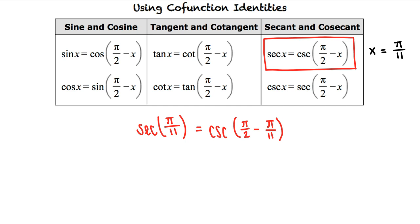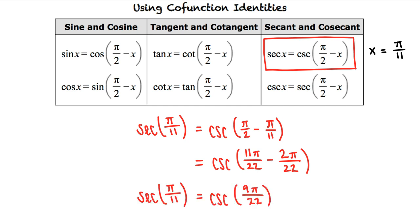This means that secant of pi-elevenths equals cosecant of pi-halves minus pi-elevenths. We can find the least common denominator of pi-halves and pi-elevenths to simplify the cosecant expression. Since 22 is the least common multiple of 2 and 11, we can rewrite the cosecant expression as cosecant of 11π/22 minus 2π/22. Simplifying, we see that secant of pi-elevenths equals cosecant of 9π/22.